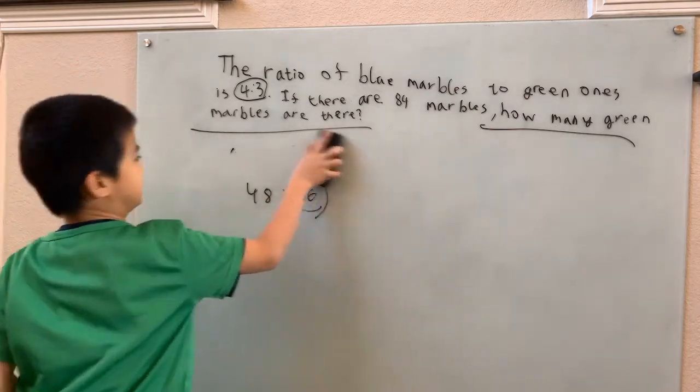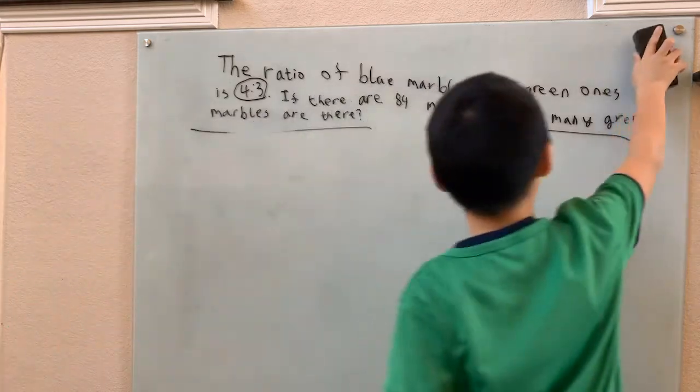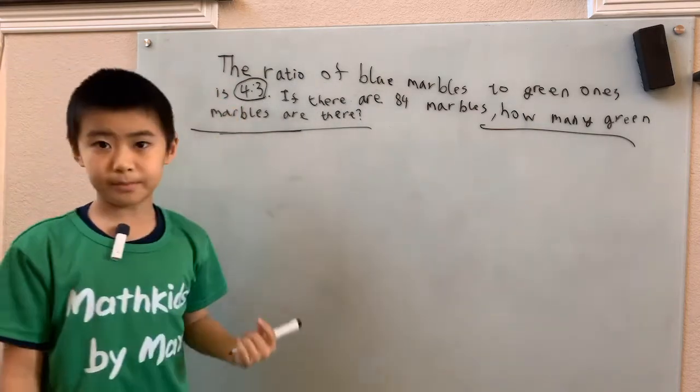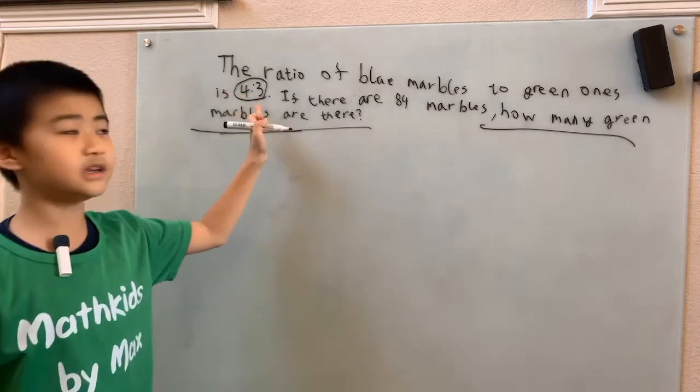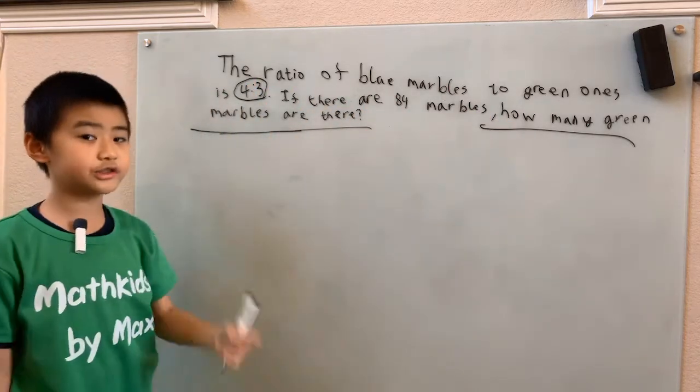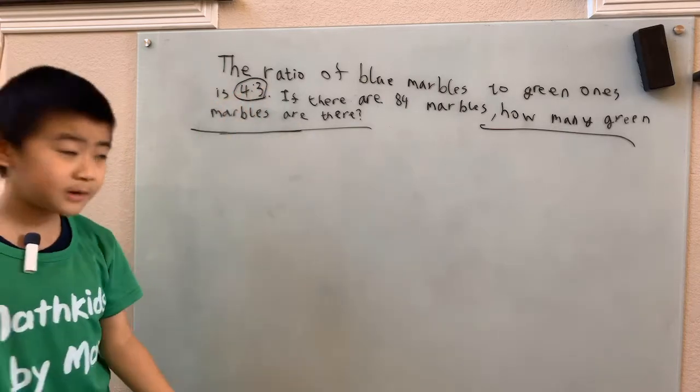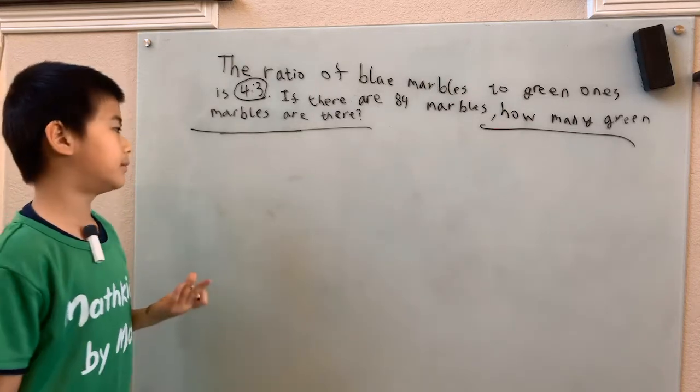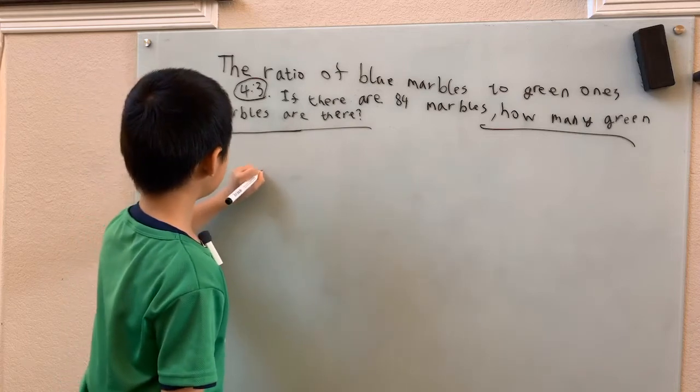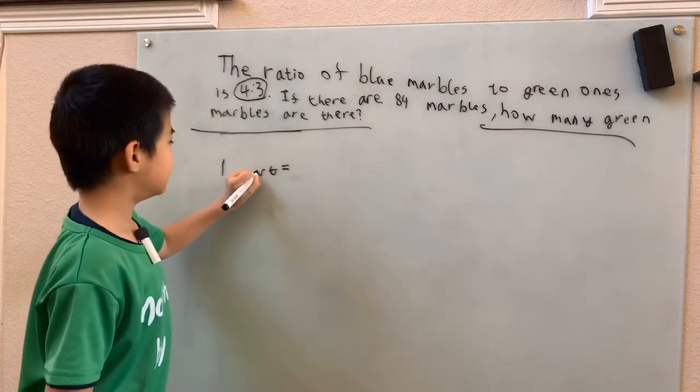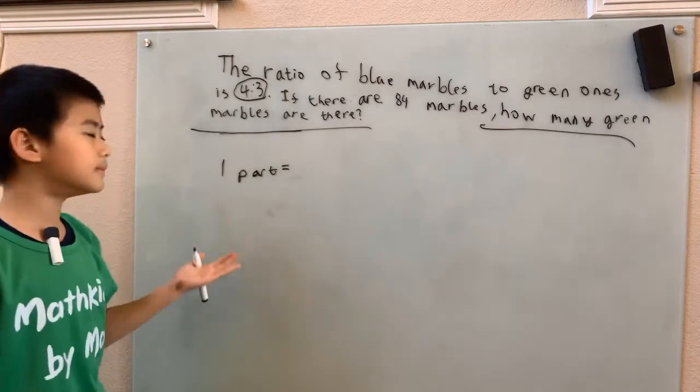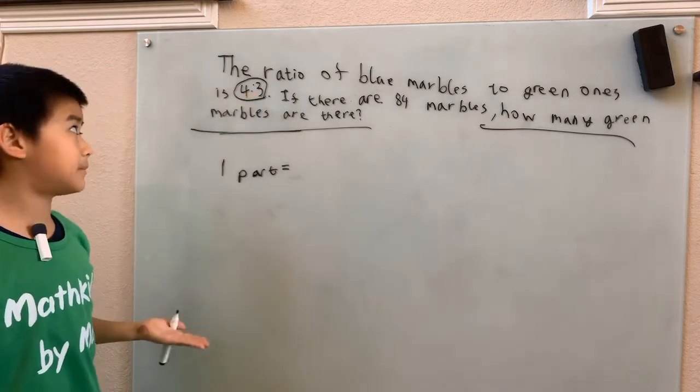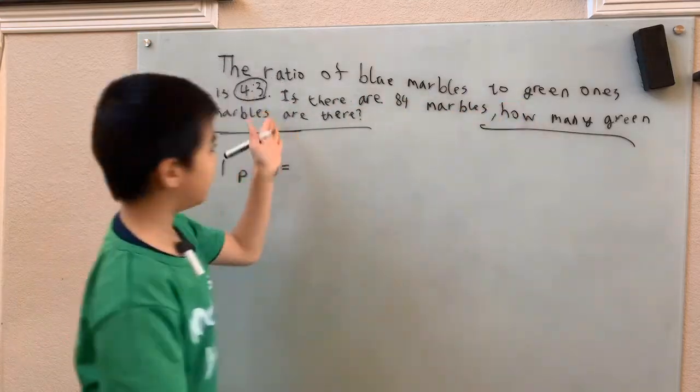Now another way to solve this problem is to look at how many parts there are in our ratio. We see each one of these four marbles is one part, four parts. And each one of these three green marbles, they're also one part. So there's four parts plus three parts is seven parts. So all we have to do is find out how many marbles are there in one part. And then we can just find how many marbles there are in one part if there are 84 marbles, and just multiply our answer by three, which is what we want, the number of green marbles.